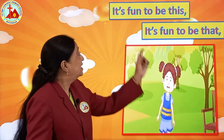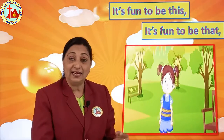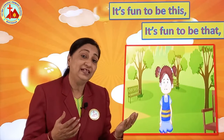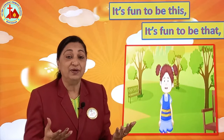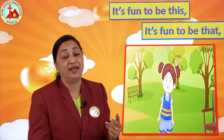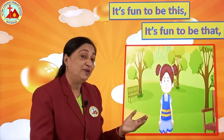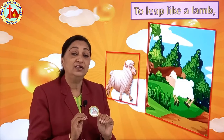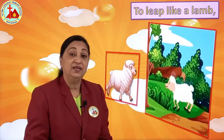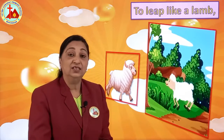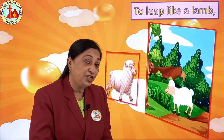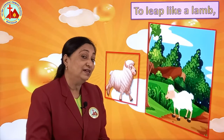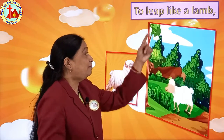Now see, this girl is singing. It's fun to be this, it's fun to be that. Then: to leap like a lamb. Leap means a short jump — yes, a small jump. See the sheep is leaping. To leap like a lamb. Lamb is a small baby of a sheep, isn't it? So see, the child is saying I can leap like a lamb. It's fun to leap like a lamb.